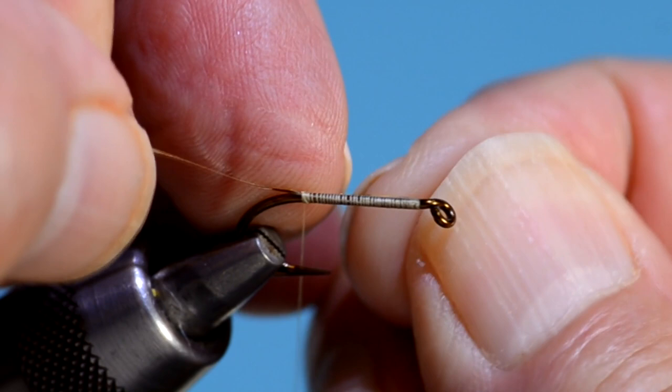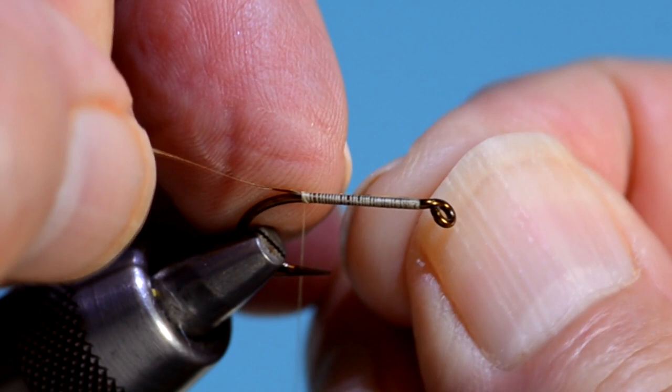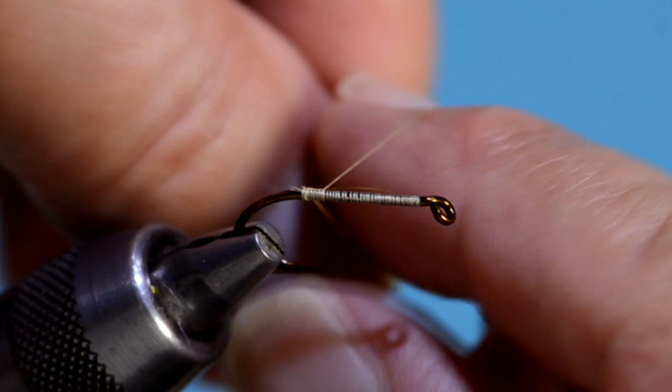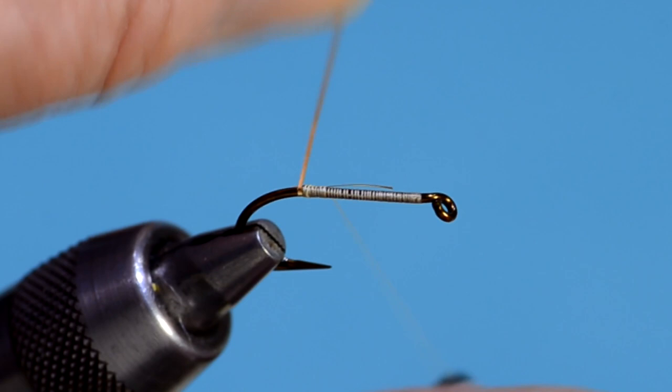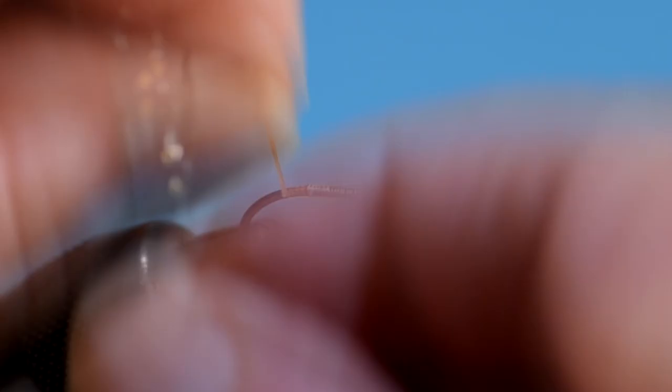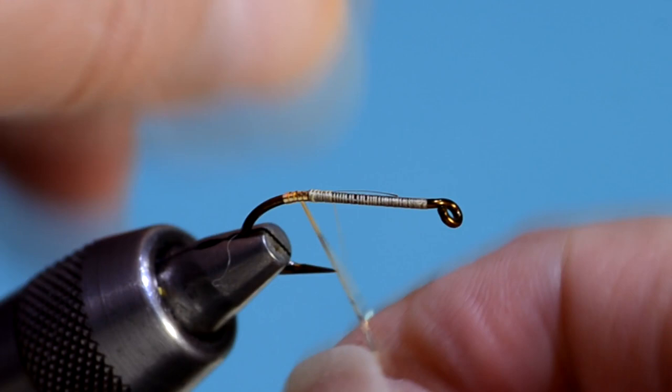I like to tie my any kind of tinsel or floss in on the far side of the hook. That way, when you start wrapping it, it'll appear to come out of the bottom of the fly. It's just a nice touch aesthetically. Five wraps back, and then five wraps forward.